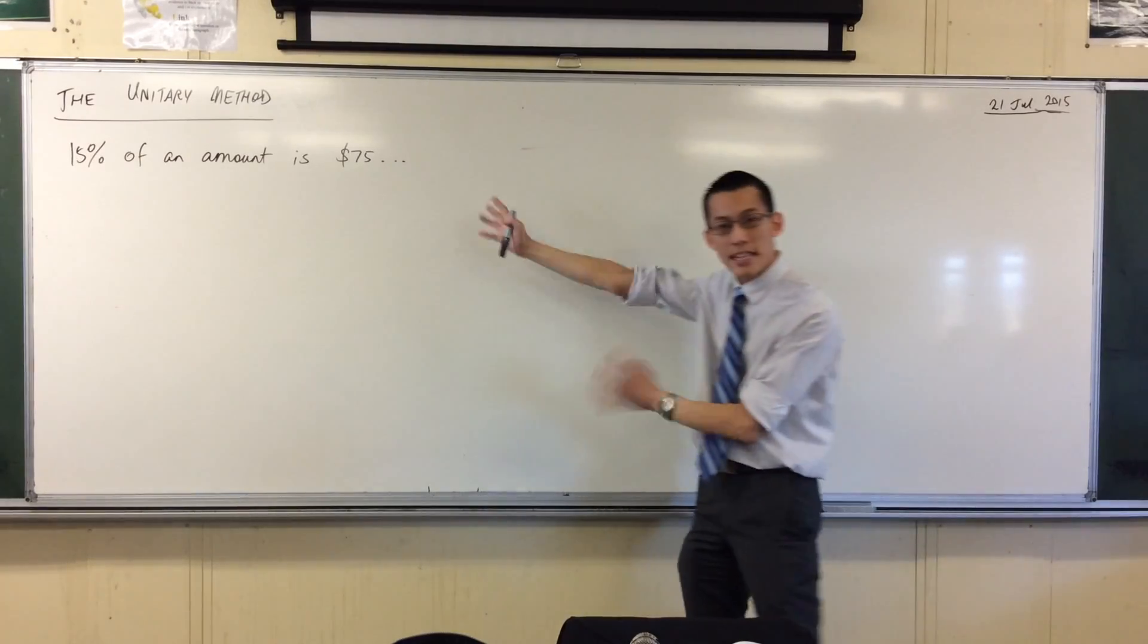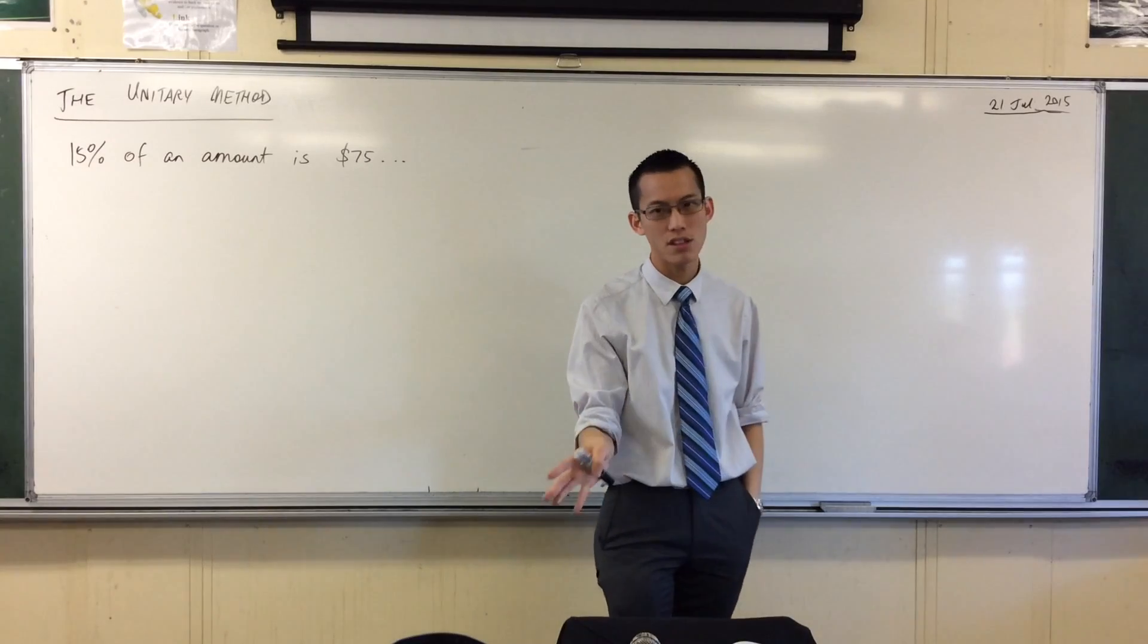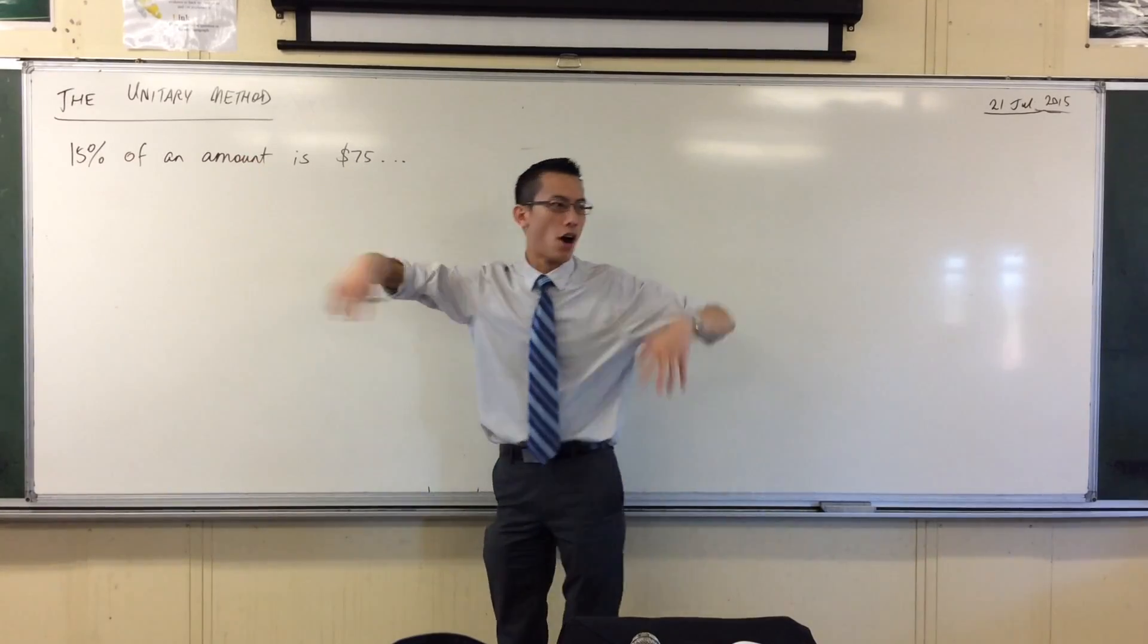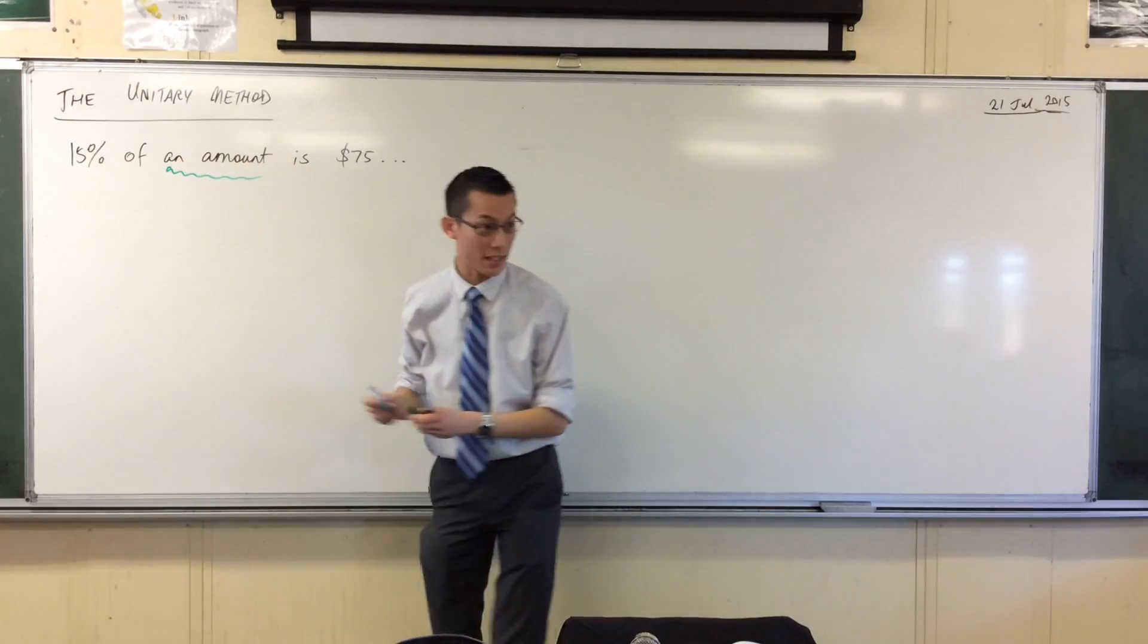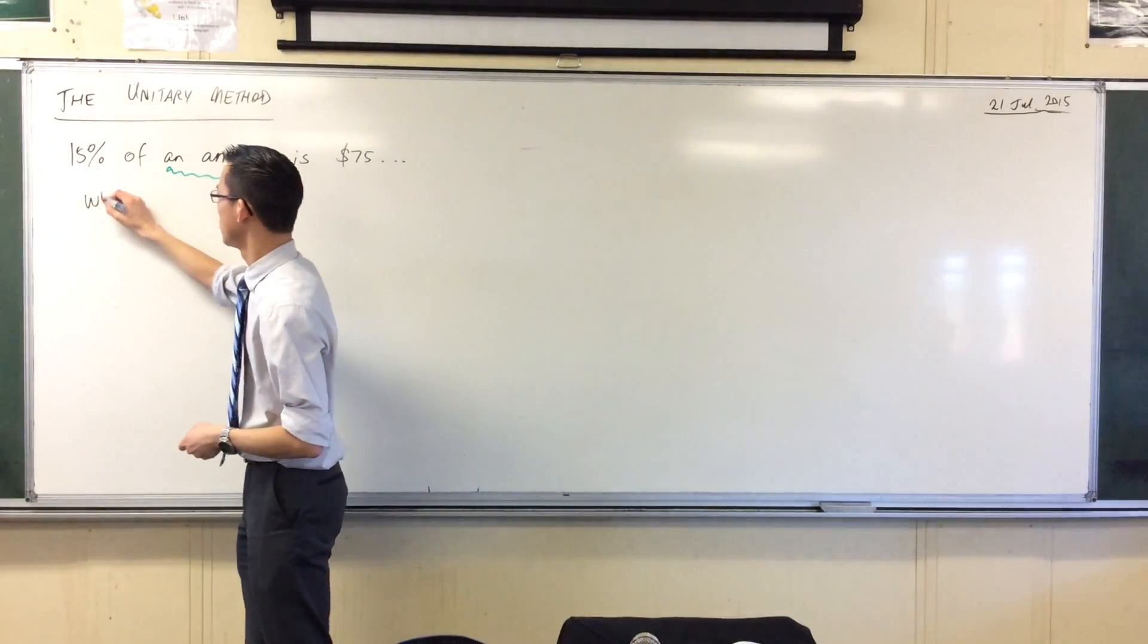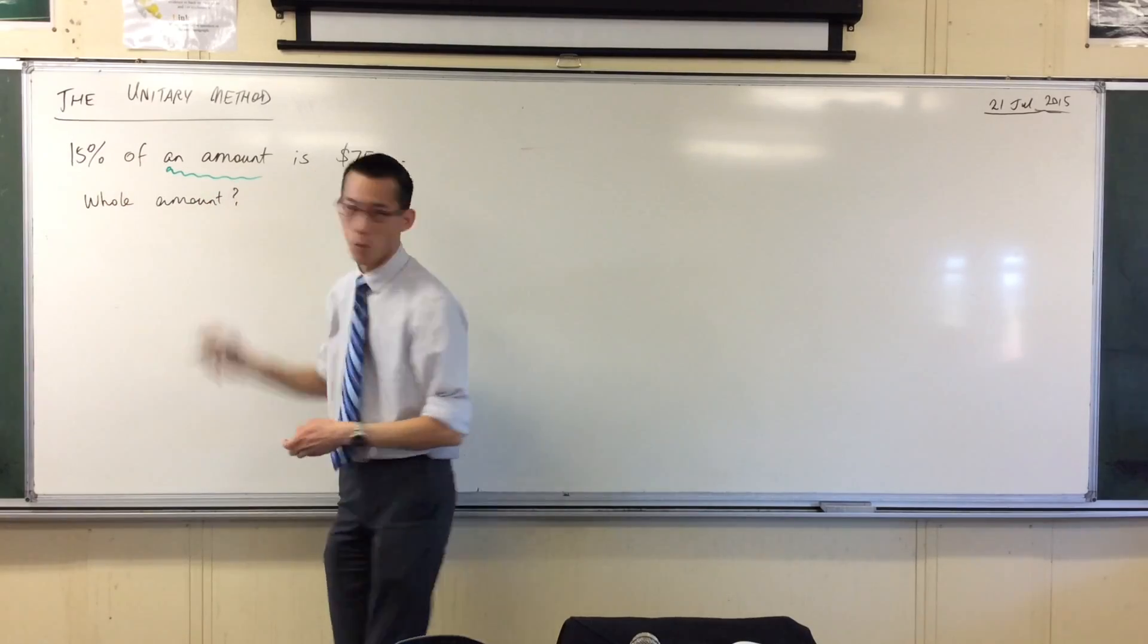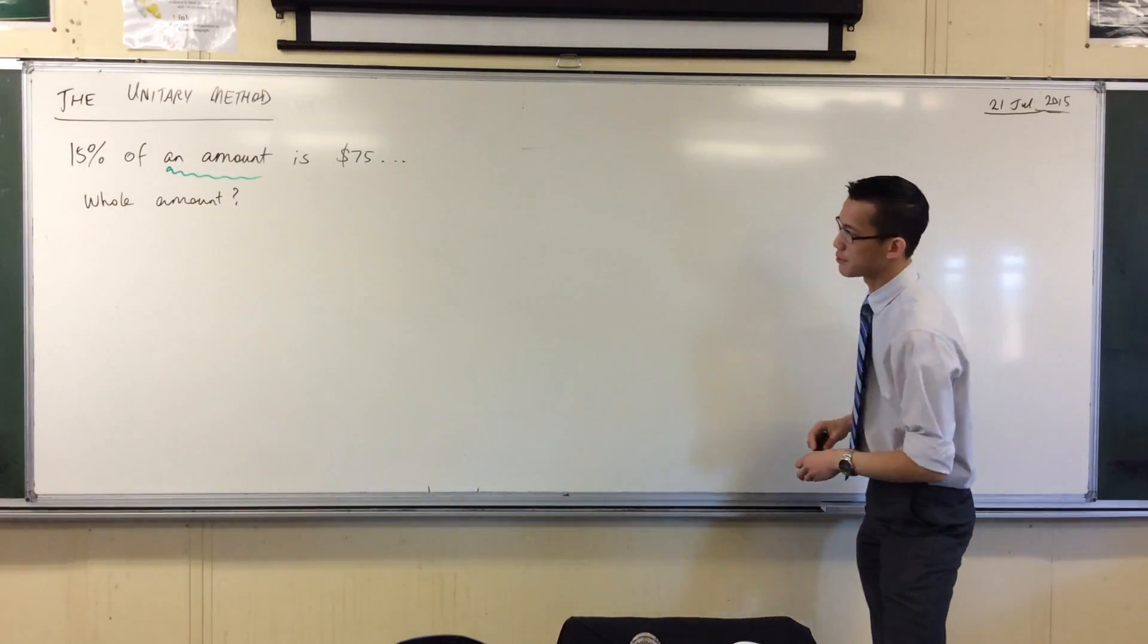The unitary method. Here's an example question that is a great candidate for the unitary method. You don't have to use it, but it's really good. 15% of an amount, and the whole point of saying an amount is I don't know what it is, is $75. The question that might get posed is, what was the amount? What was that entire amount, what did you actually start with before you took 15% and got a result?